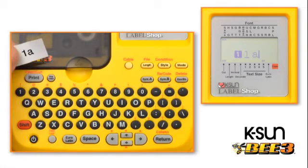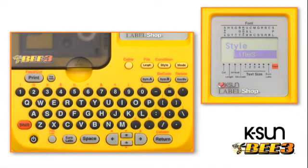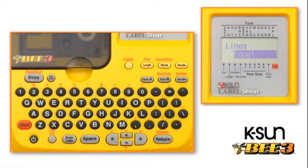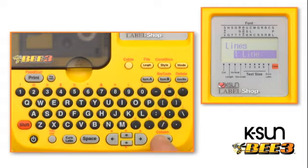To select a smaller text size, press the CONDITION key. STYLE, LINES will be displayed in the window. Press RETURN and LINES, EQUAL will be displayed in the window. Press the DOWN ARROW key until one line appears in the window. Press RETURN. The window displays the current text size, which is 1A.